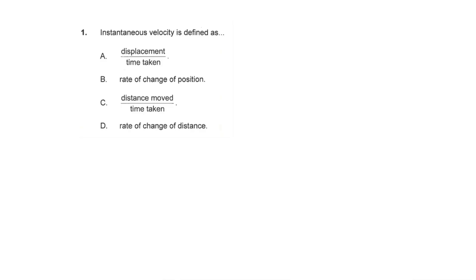Well, that's the velocity of an object at a specific moment in time — so how fast is something moving right now, and in what direction? This is different from average velocity. Average velocity is going to be the total displacement over some time interval. That's actually what's represented in answer choice A, so answer choice A is incorrect.